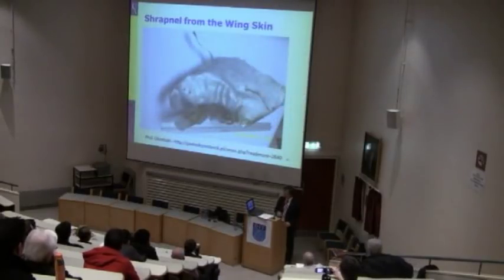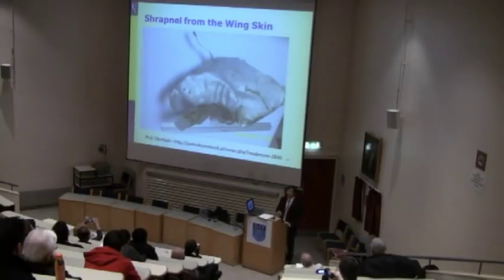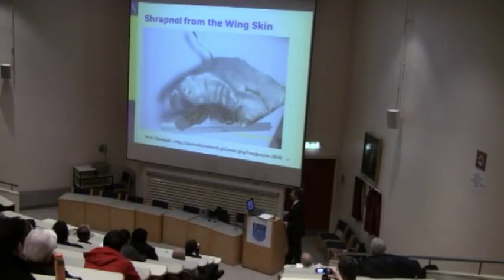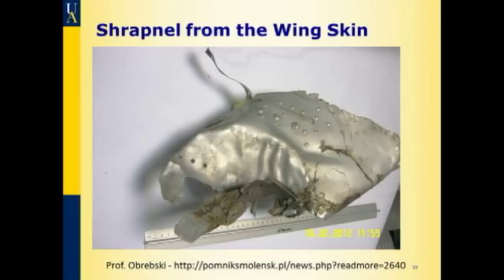The conclusion was that there must be an explosive involved. Also, some parts were smuggled out of Russia. A brave person brought a piece from the wing, and you can see the typical damage from pressure inside the wing — ripped-off rivets and a smoked internal surface of the shiny wing part. This is proof there was an explosion in the wing.